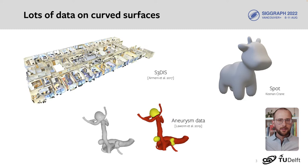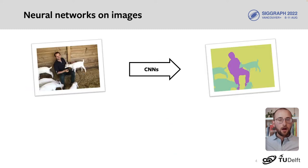How do we use all that data? On images, people have found convolutional neural networks or CNNs to be very effective. Such networks could be used, for example, to segment images. In this presentation, we seek to design similar networks, but for surfaces in 3D.